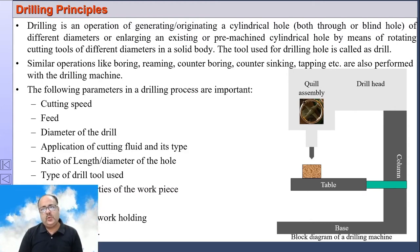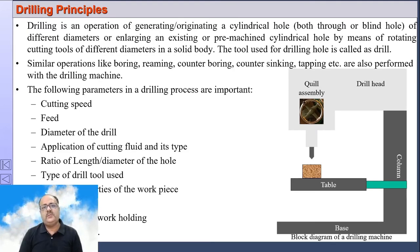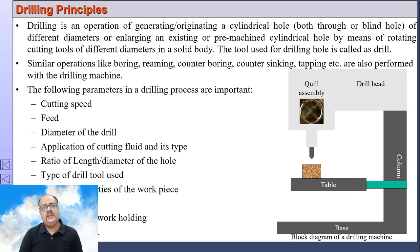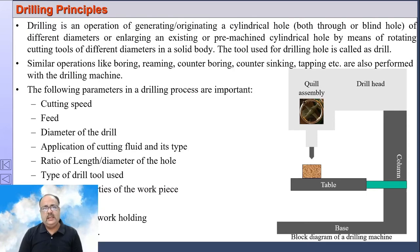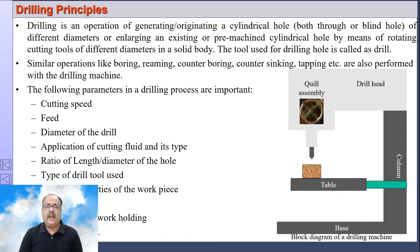The cutting tool may be of different diameters in a solid body. The tool that we use in drilling is called a drill tool, or sometimes it is referred to as a drill bit. Similar operations that can be performed on a drilling machine, apart from drilling, are boring, reaming, counter-boring, counter-sinking, and tapping. These operations are also performed on the same drilling machine.